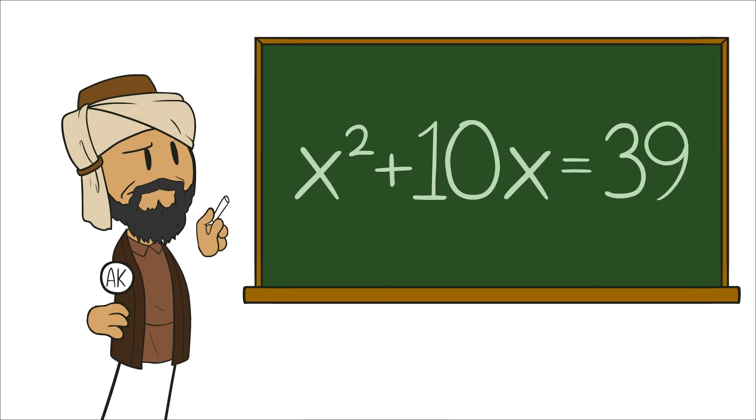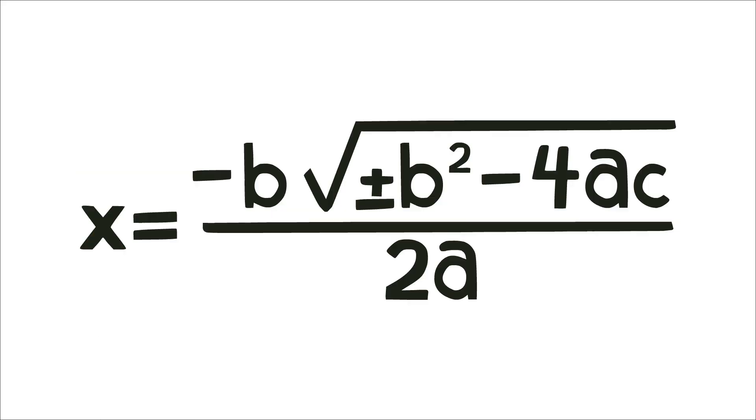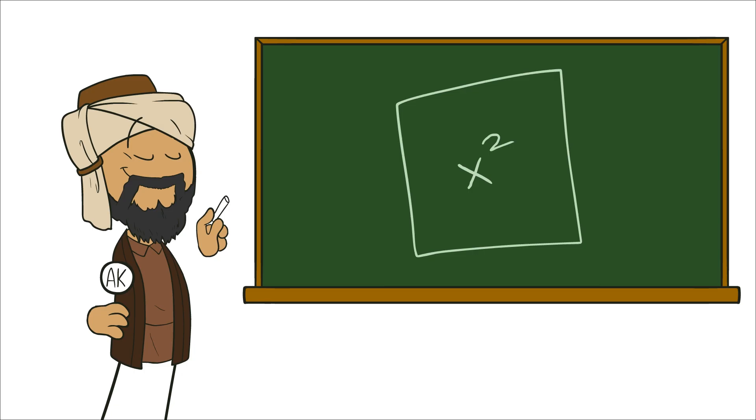Al-Khwarizmi had this famous equation where he wanted to solve x squared plus 10x equals 39. Instead of using the quadratic equation like we might today, he literally made a square of x and drew the thing. So, step one, let's lay out a line and call it x units long. Step two, put another x unit long line at a right angle to your first line, and make a square out of the two. So now we have x squared.